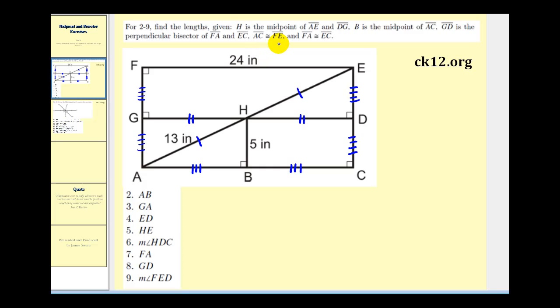We're also told that AC is congruent to FE and FA is congruent to EC. And we already knew that because we have a quadrilateral with four right angles we would have to have a rectangle and therefore we know opposite sides would be congruent. Okay, let's go ahead and see if we can answer these questions now.